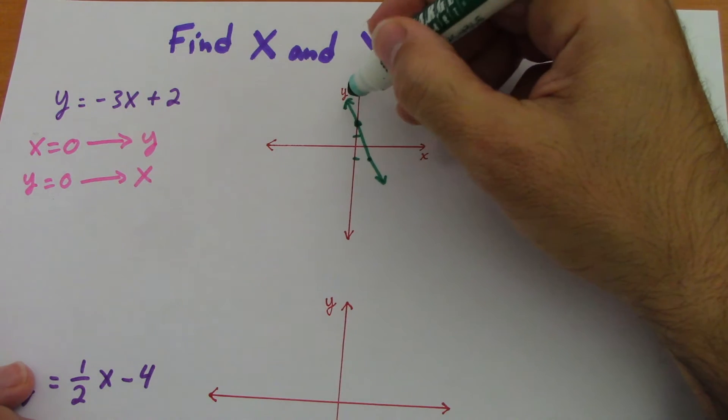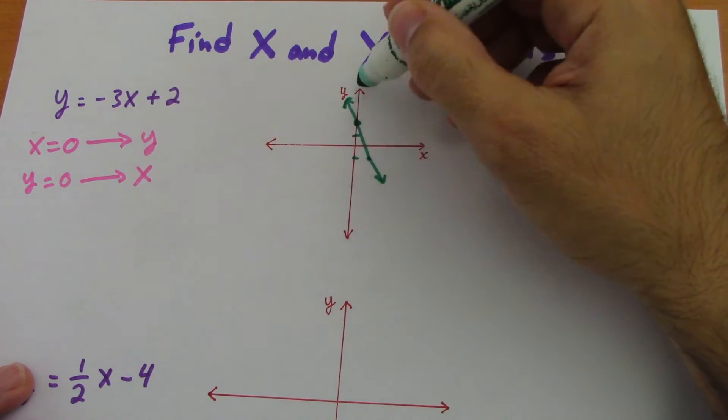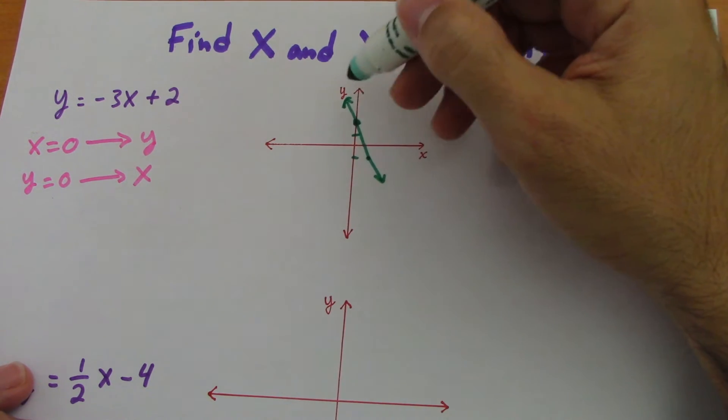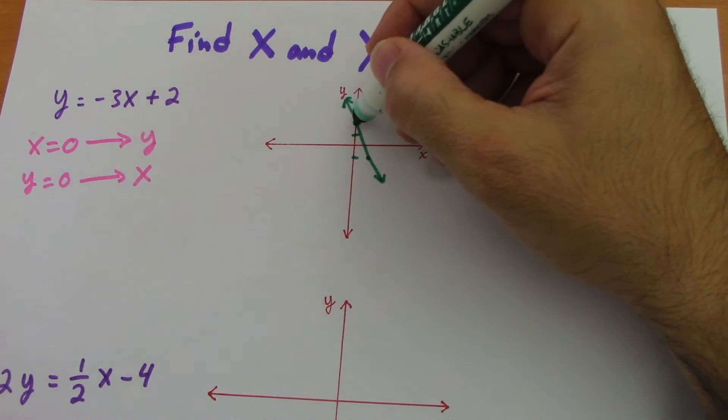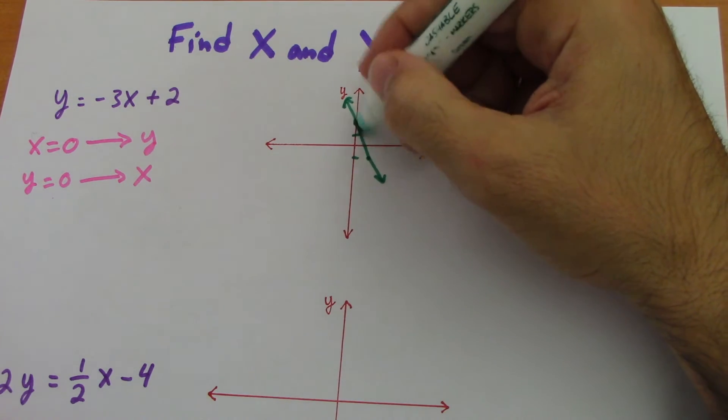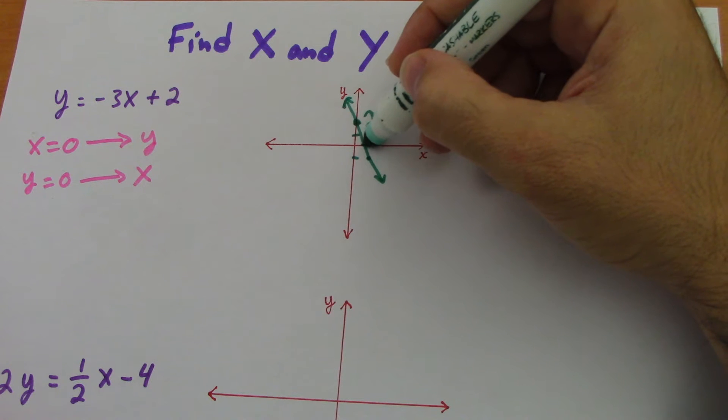Now let's see, take a look which are the intercepts. The y intercept, which is the point where the line cuts the y axis or crosses the y axis, is here in 2. And here, the point where the line crosses the x axis, we need to find it.